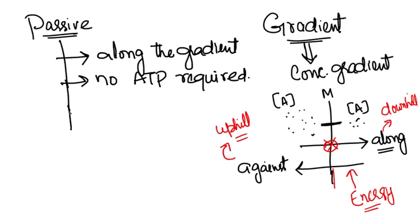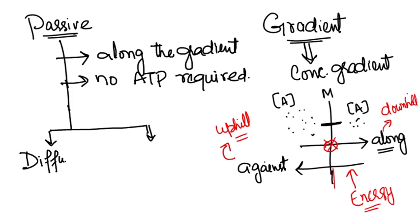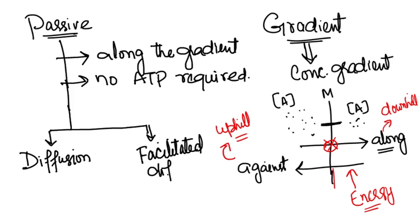Passive transport is divided into two categories: the first is called simple diffusion, and the second is called facilitated diffusion. Let's understand what diffusion and facilitated diffusion are.